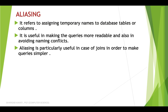Aliasing is particularly useful in the case of joins and in order to make queries simpler. We already learned about three types of joins: equi join, natural join, and Cartesian product, but there we did not use aliasing. Now we will see how aliasing is very useful in joins — otherwise the queries become more and more complex, but using aliasing they can be made simpler.